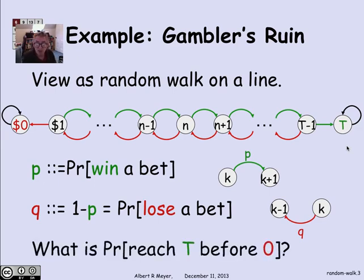The typical kind of question that we would ask about a random walk on a graph would be what's the probability of reaching T, the target, before reaching 0 bankrupt given that you're starting at some state n.